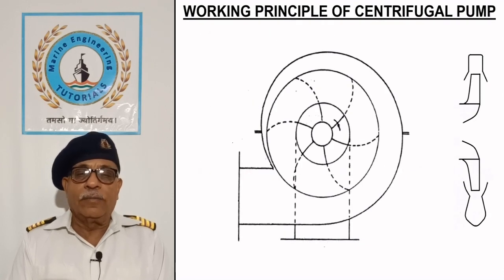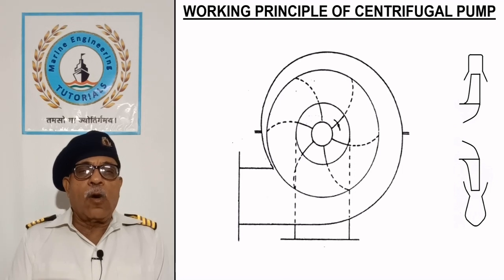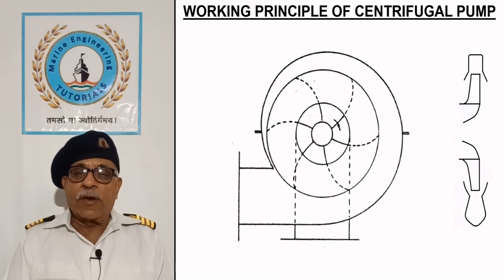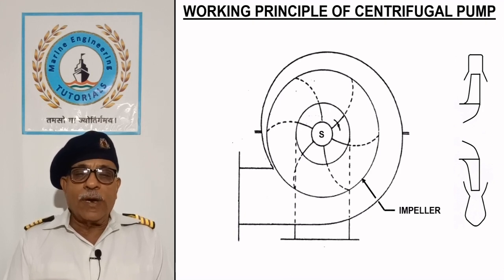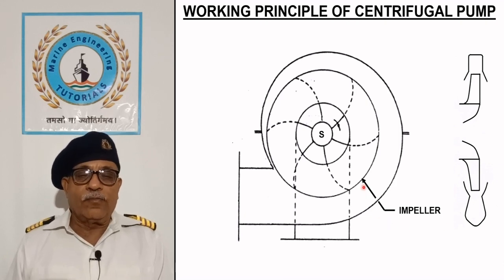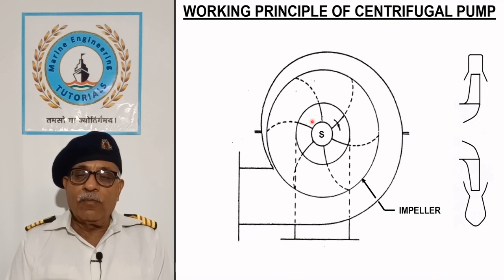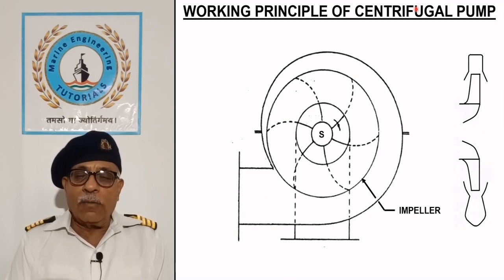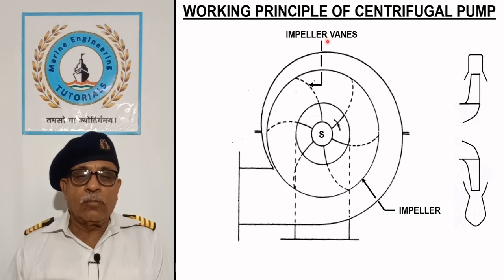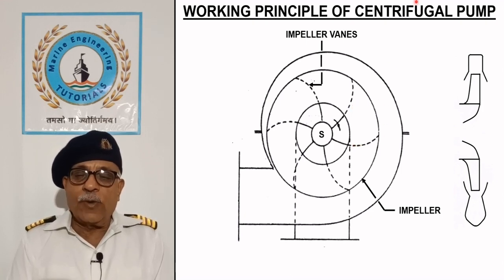Working principle of centrifugal pump: this sketch explains the working principle. The pump casing should be filled up by the liquid before the pumping action can take place. The pump consists of an impeller attached to a shaft driven by a prime mover, which can be an electric motor, a hydraulic motor, a diesel engine or a steam turbine. The impeller has a number of vanes which displace the liquid, dragging it between them, thereby imparting kinetic energy to the liquid.